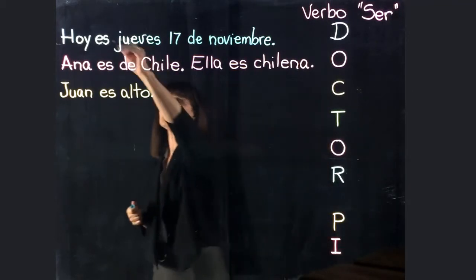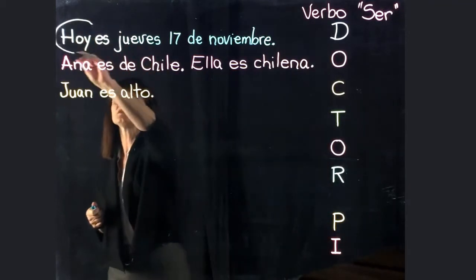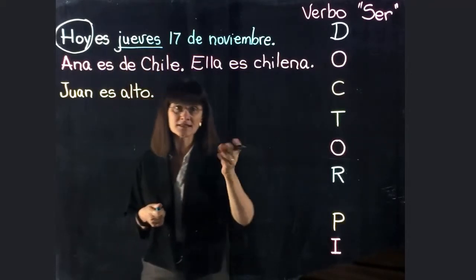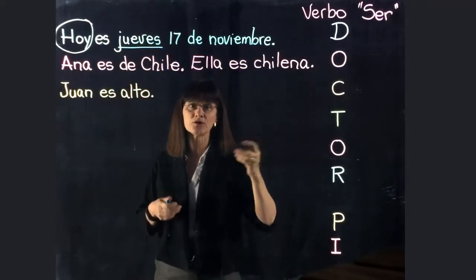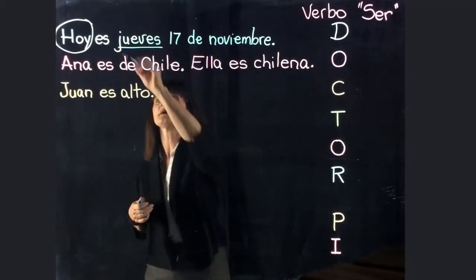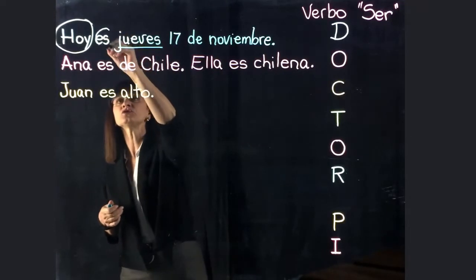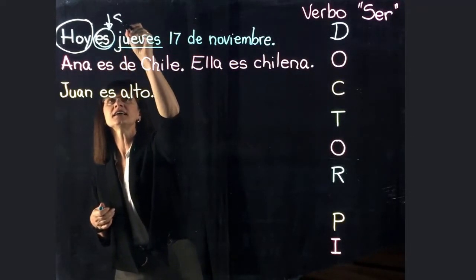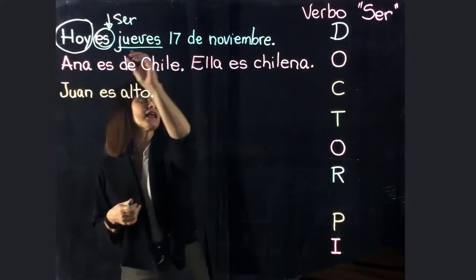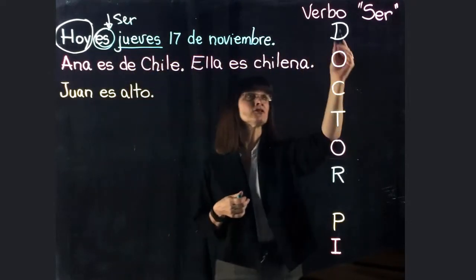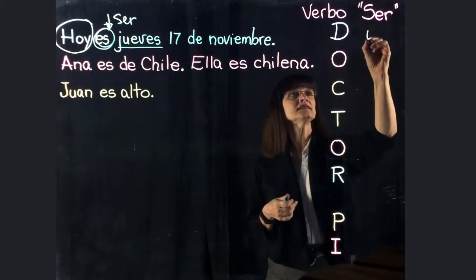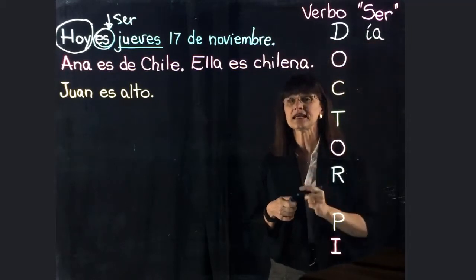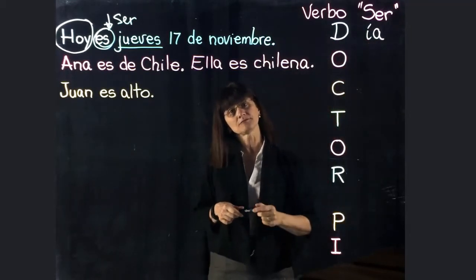¡Excelente! Estamos hablando del día. Estamos hablando de que hoy es jueves — no es viernes, no es sábado, no es domingo. Es jueves. Y estamos usando el verbo ser. Este es el verbo ser. ¿Y estamos hablando de qué? De día. Estamos hablando del día.